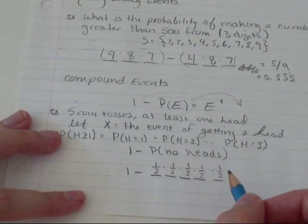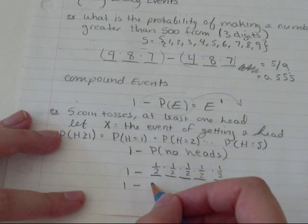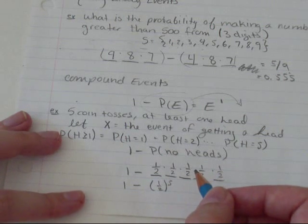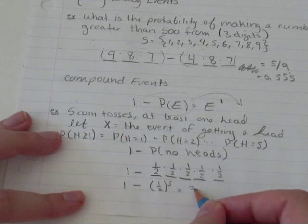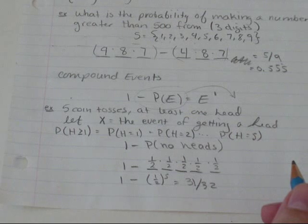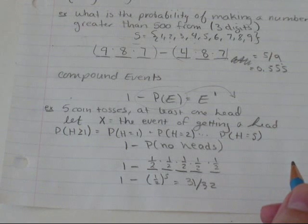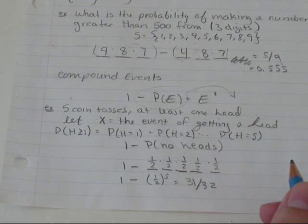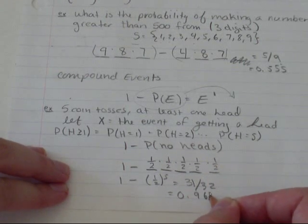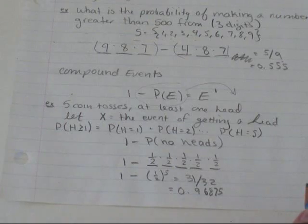And I think when you find, you can simplify that as one minus one over two to the fifth. And I believe that gives you 31 over 32, which is 0.96875. And I'll see you next time.